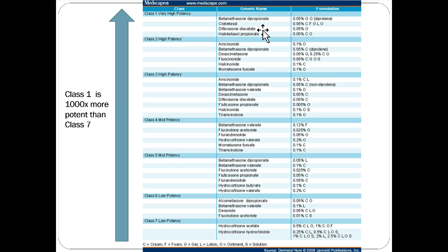The rest of the classes get a little muddied, so I'm not going to spend a ton of time on them. I'm not going to ask you to pick a specific class three high-potency agent. We're basically going to ask for high-potency, mid-potency, or low-potency. You can use this chart as a reference when you're on rotation if you want, but for exam purposes, I don't think it's worth memorizing all of it.